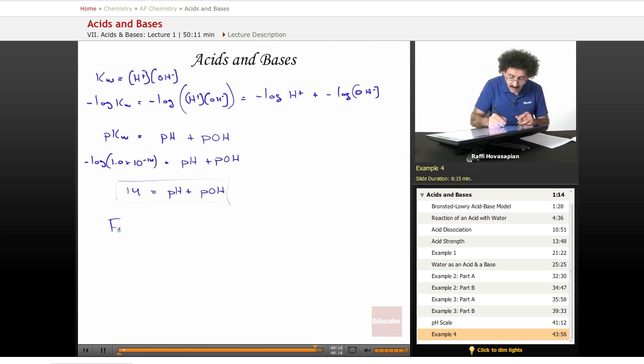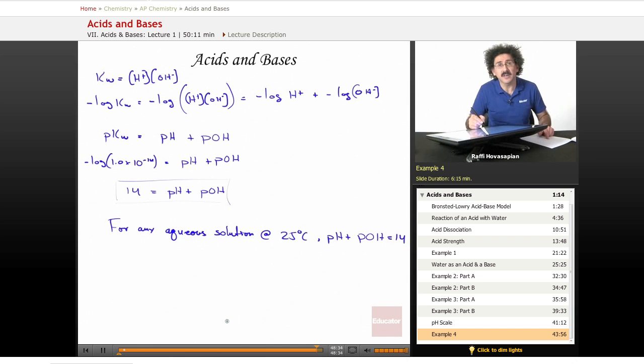So for any aqueous solution at 25 degrees Celsius, pH plus the pOH of the solution equals 14. This is just a restatement of the fact that the H plus concentration times the OH minus concentration equals 1.0 times 10 to the negative 14.